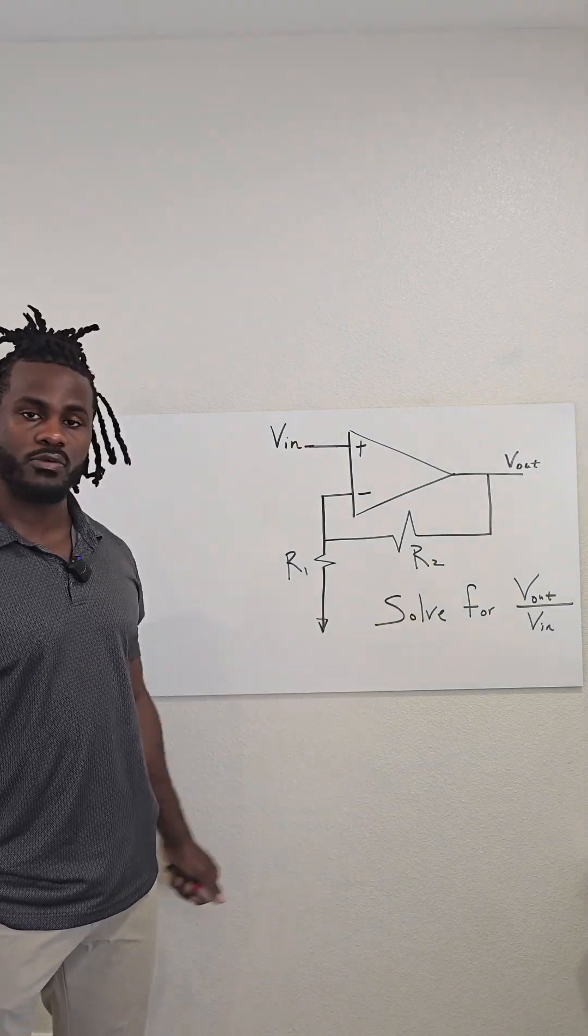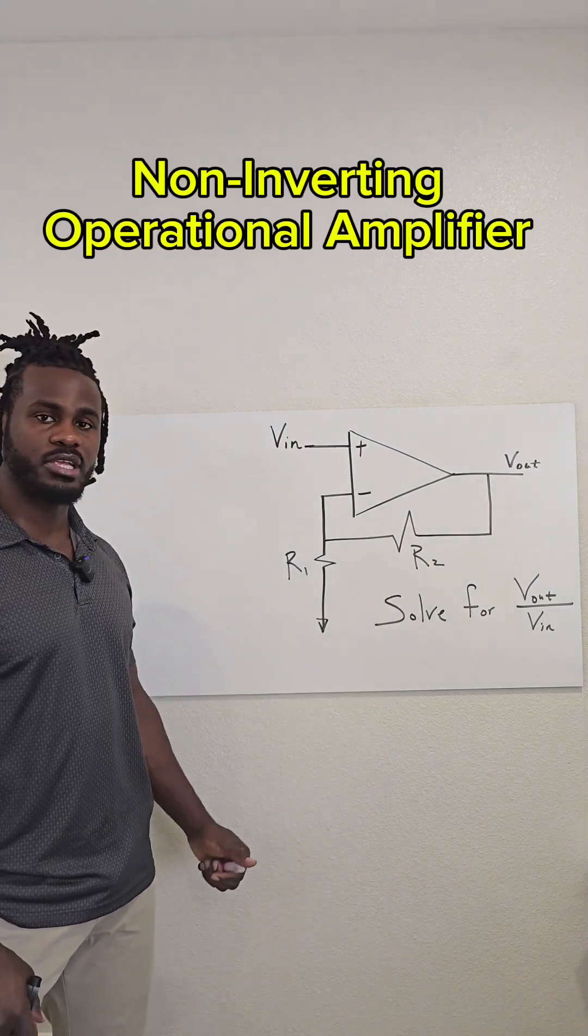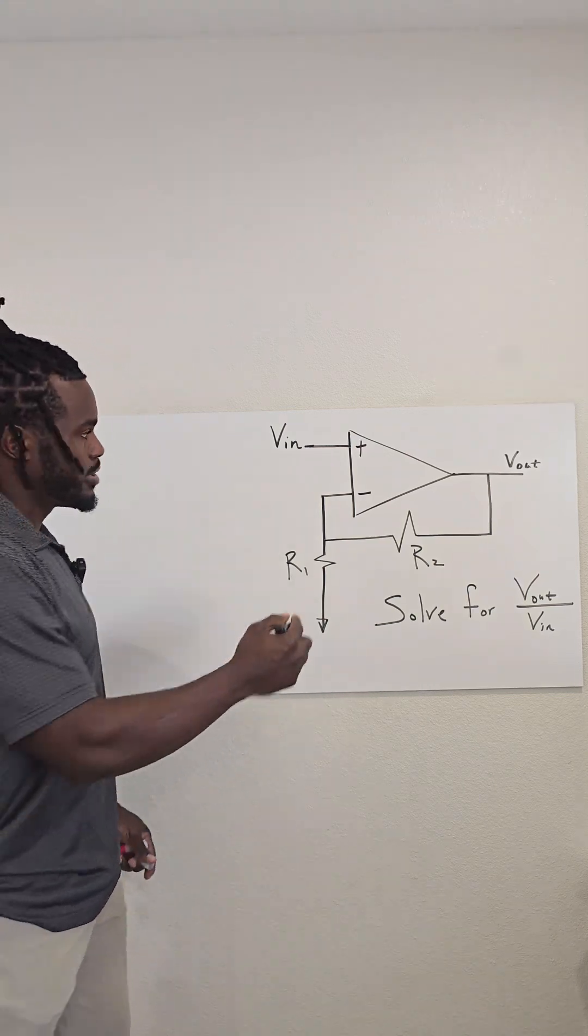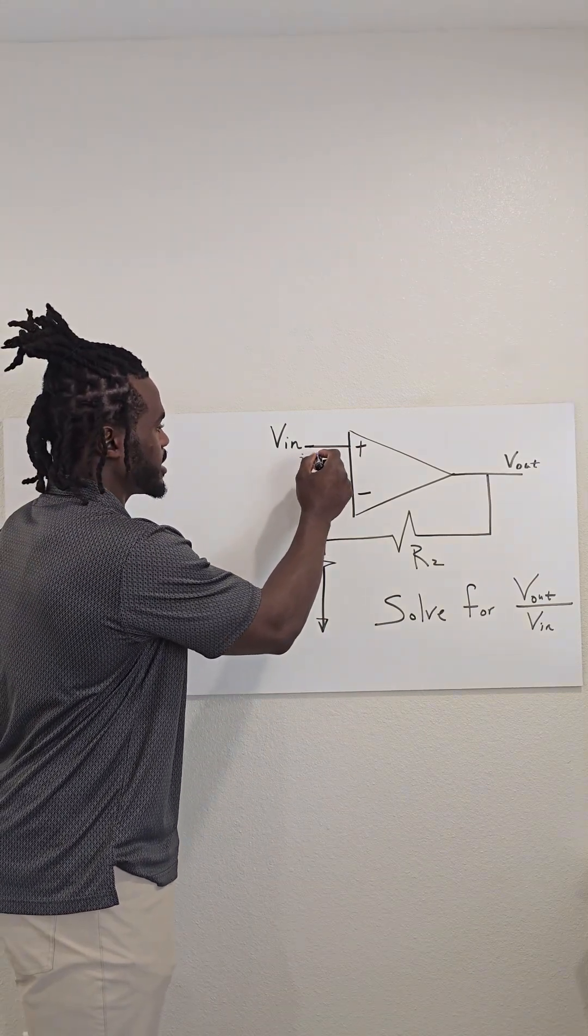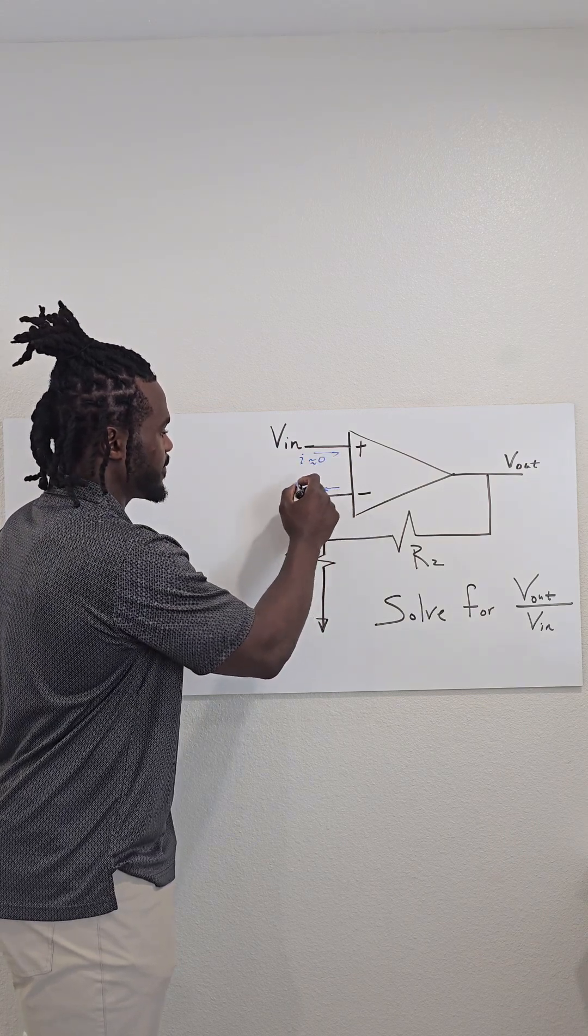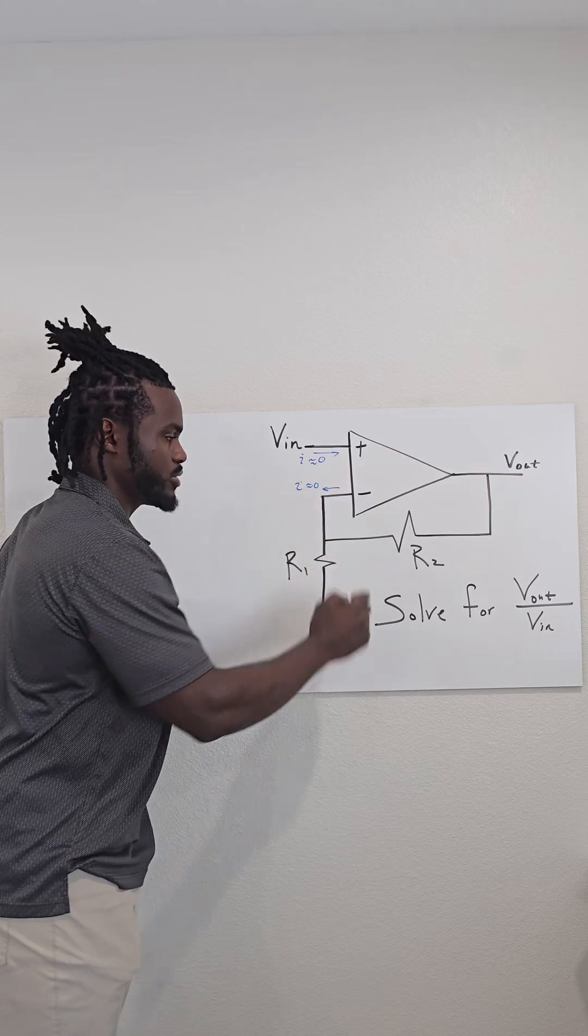Let's go ahead and solve for Vout over Vin of this non-inverting operational amplifier. In an ideal op amp, essentially the current that goes into here is very close to zero, and the current that's coming out of here is also very close to zero.